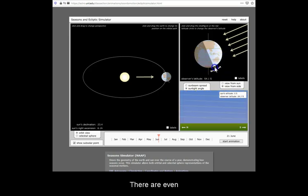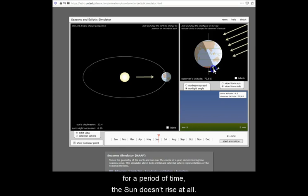There are even latitudes within the Antarctic Circle, where, for a period of time, the Sun doesn't rise at all.